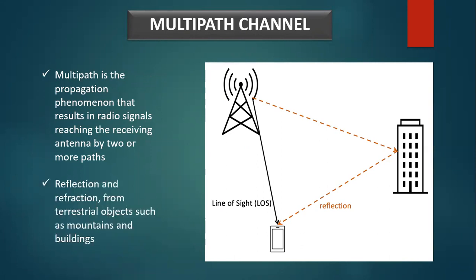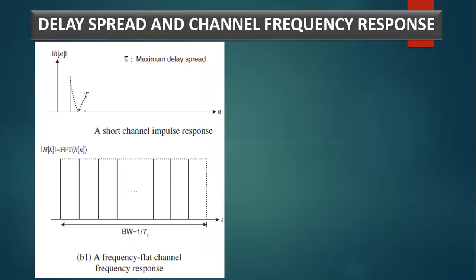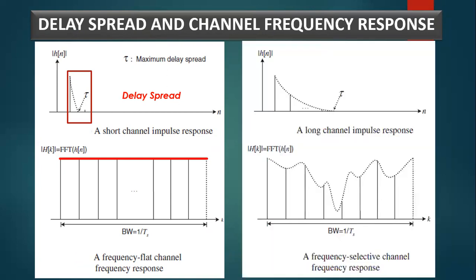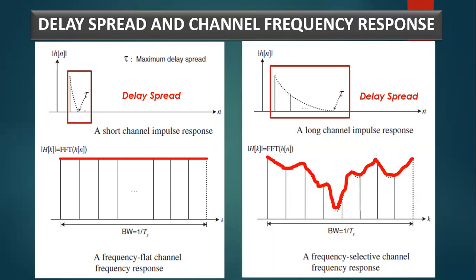The major causes of multipath include reflection and refraction from terrestrial objects such as mountains and buildings. A channel delay spread is the impulse response of the wireless channel. A short channel impulse response corresponds to a frequency flat channel, generally in the case of a single path channel, whereas a large impulse response or delay spread results in a frequency selective channel, as illustrated in the figure on the right.